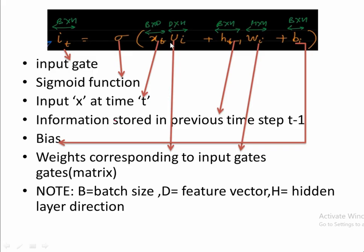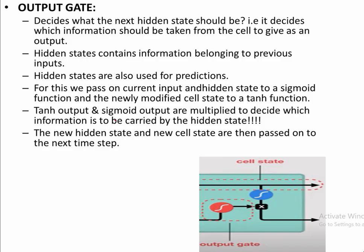The input gate mathematical model uses: the input at that time, weights corresponding to the input gate, the previous state, weights corresponding to it, and the bias — a sigmoid activation function applied to the overall linear relationship. The third gate is the output gate, which decides what the next state should be and which information should be taken from this cell for output. The hidden state and current input are passed to a sigmoid function, and the newly modified cell state is passed through tanh. The tanh output and sigmoid output are multiplied to decide which information the hidden state carries.